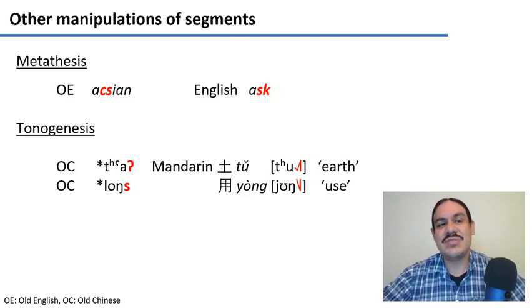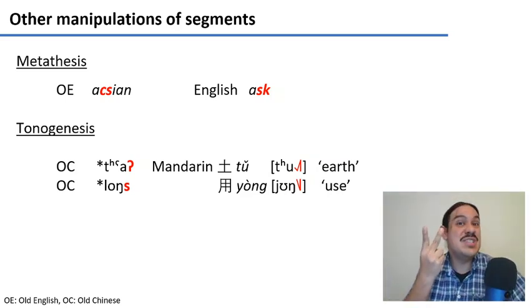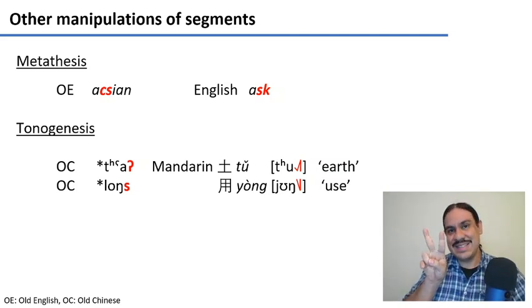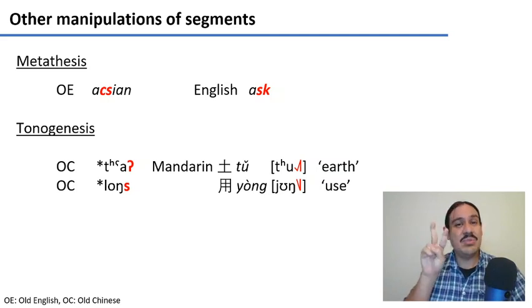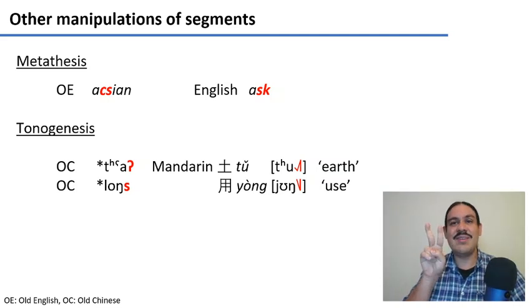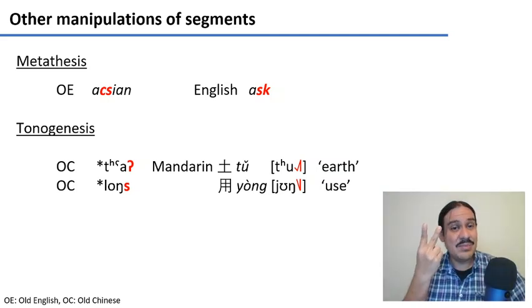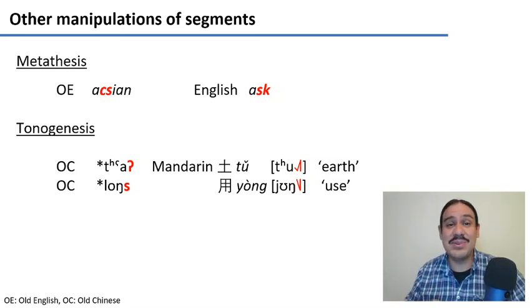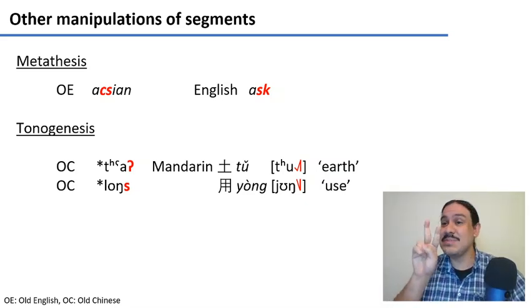There are other types of segment manipulation. For example, metathesis, where segments change places. In Old English, the verb 'to ask' was 'axion', with the K first. Metathesis is very unstable, so over time these segments go back and forth. In modern English we have 'ask', but many speakers also use 'ax'. Five hundred years from now, it's probably going to be 'ax' again, because metathesis keeps these segments changing.